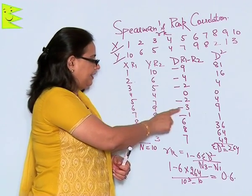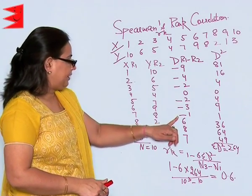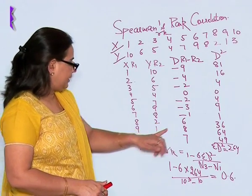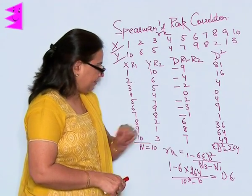6 minus 9 is minus 3, and 7 minus 8 is minus 1, 8 minus 2 is 6, 9 minus 1 is 8, and 10 minus 3 is 7.